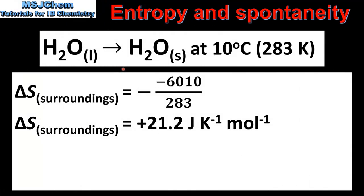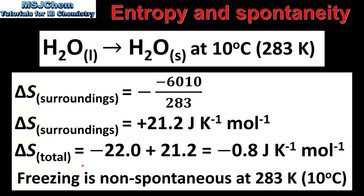Next we calculate the total change in entropy for the freezing of water at 10°C, which is 283 K. Using the same equation but with a temperature of 283 K, this gives a change in entropy of the surroundings of +21.2 J/K·mol. The total entropy change is −0.8 J/K·mol, which tells us that the freezing of water is non-spontaneous at 283 K.